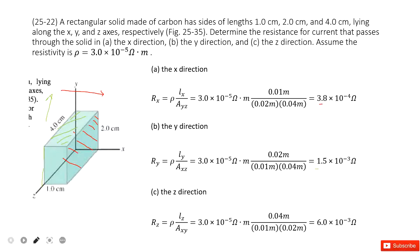The next one is the current goes through the z direction. Goes through z direction this way. So we can consider the length is Lz, and then cross-sectional area is Axy. This one, right?